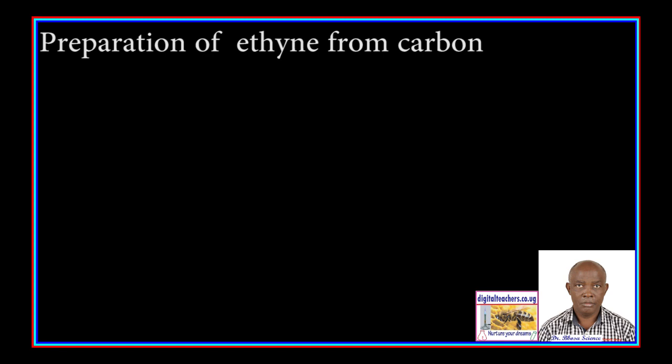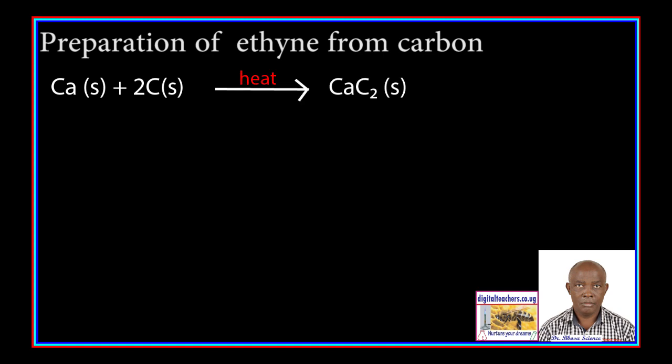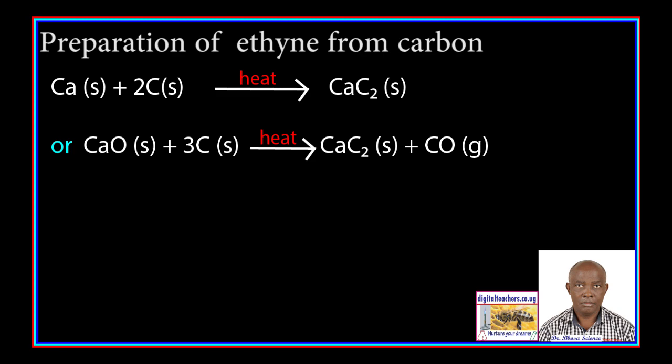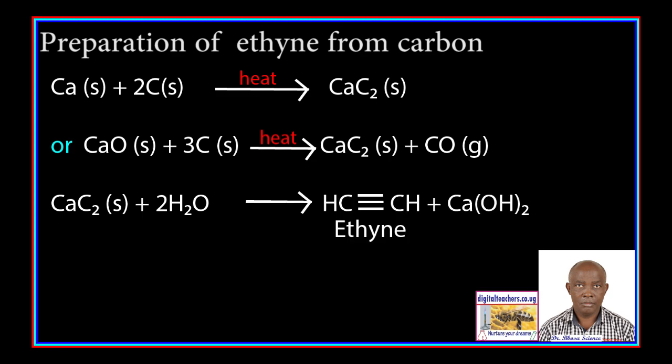Preparation of ethyne from calcium carbide: calcium reacts with carbon to form calcium carbide. Alternatively, calcium oxide reacts with carbon to form calcium carbide and carbon monoxide. Calcium carbide then reacts with water to form ethyne and calcium hydroxide.